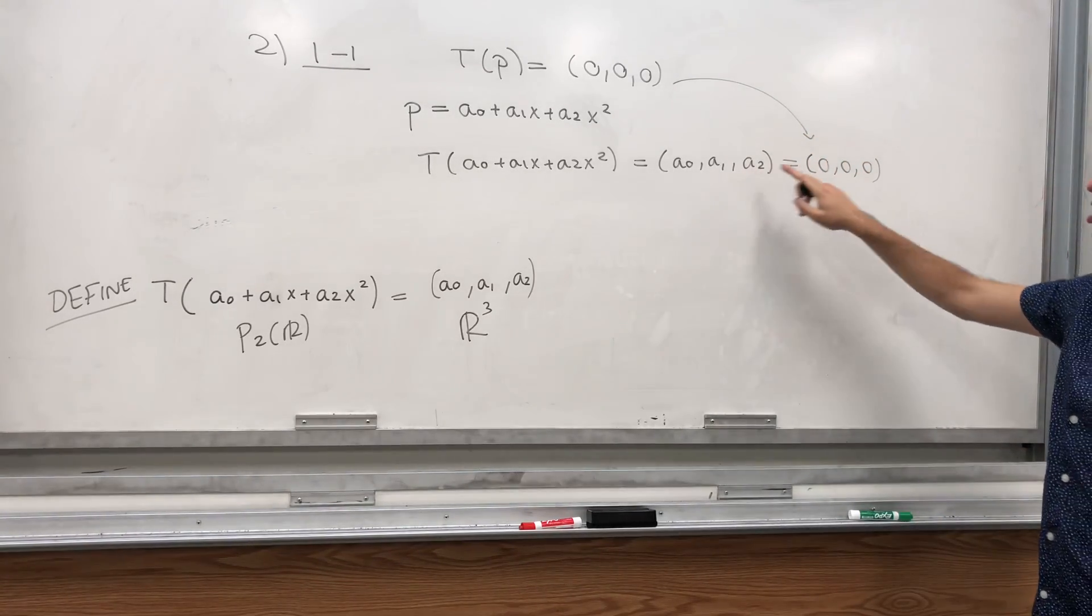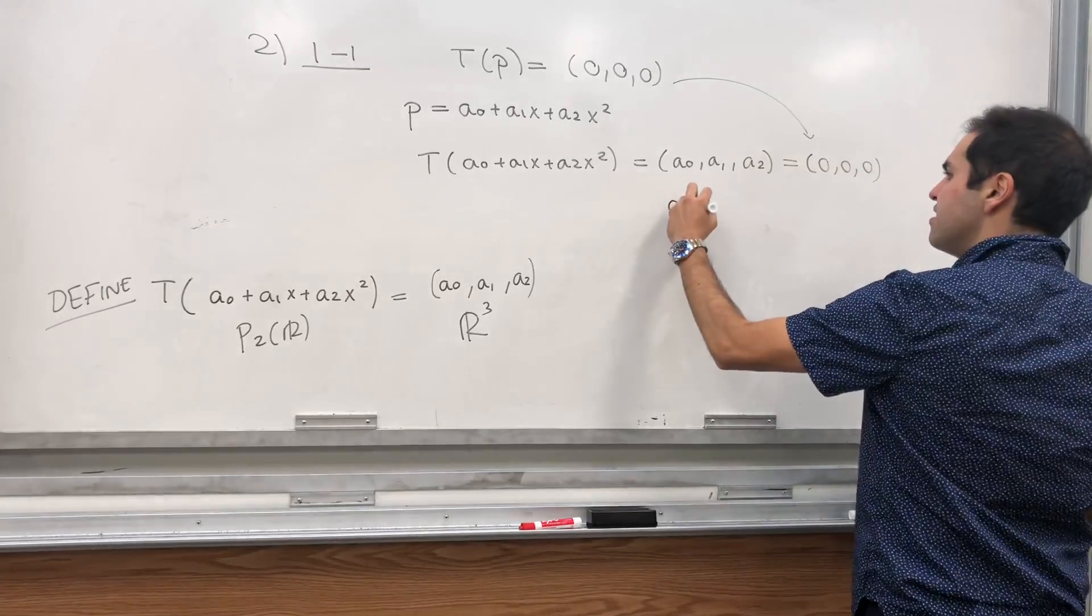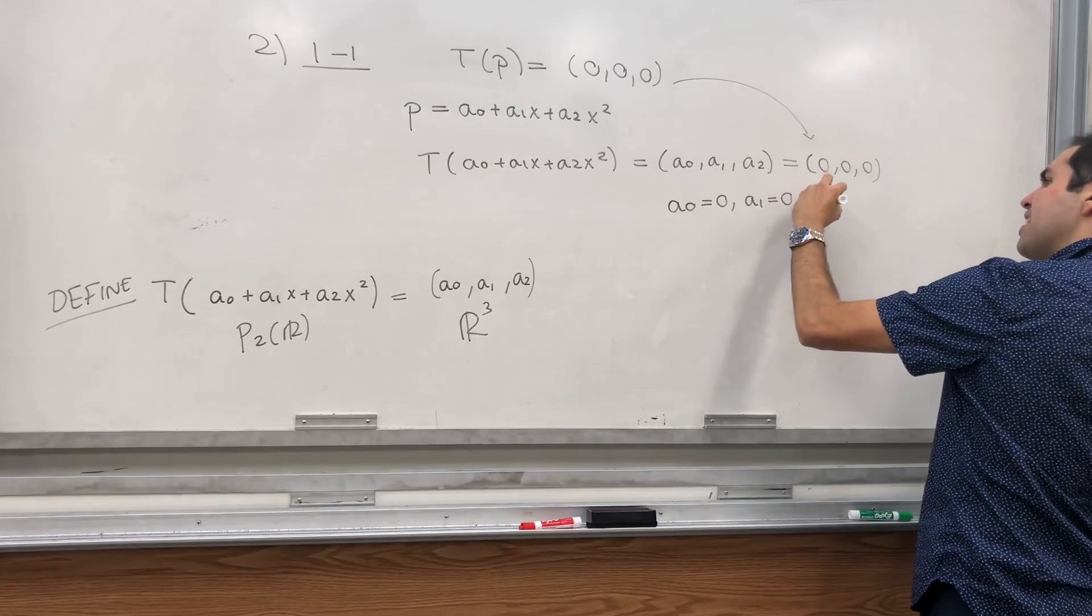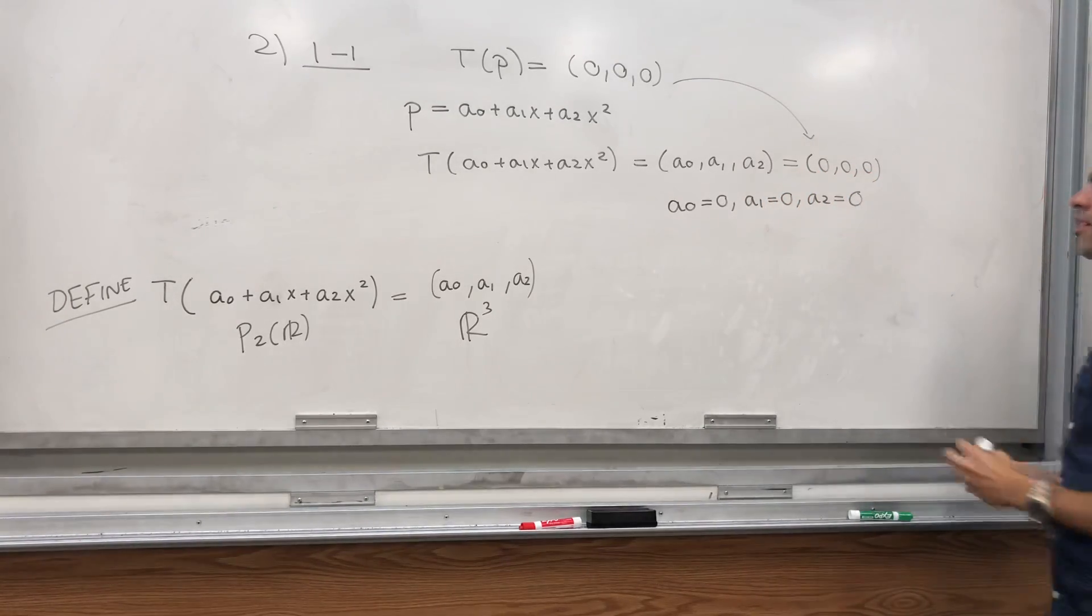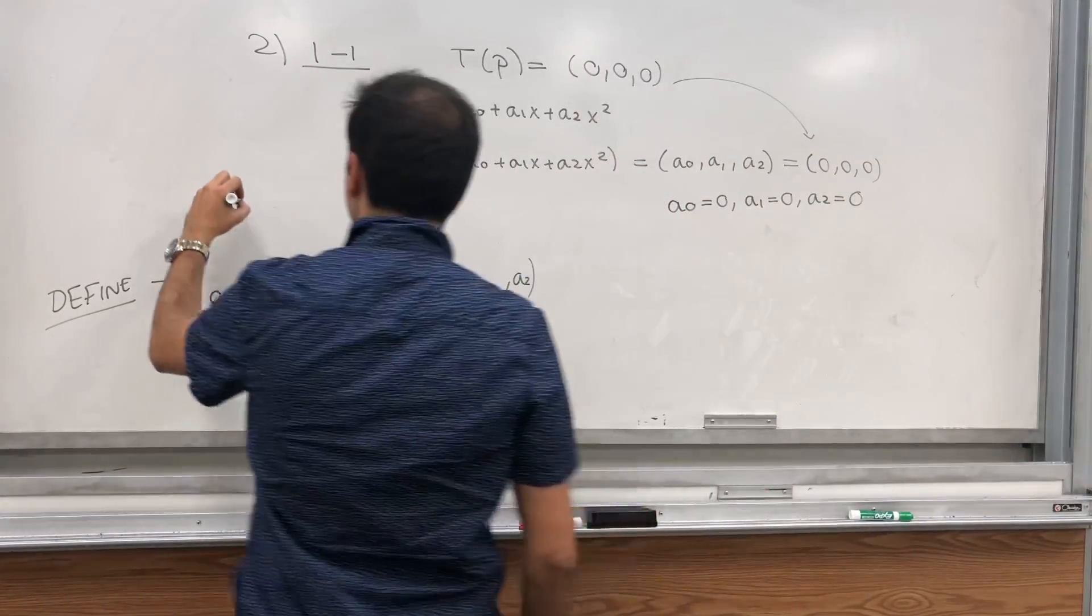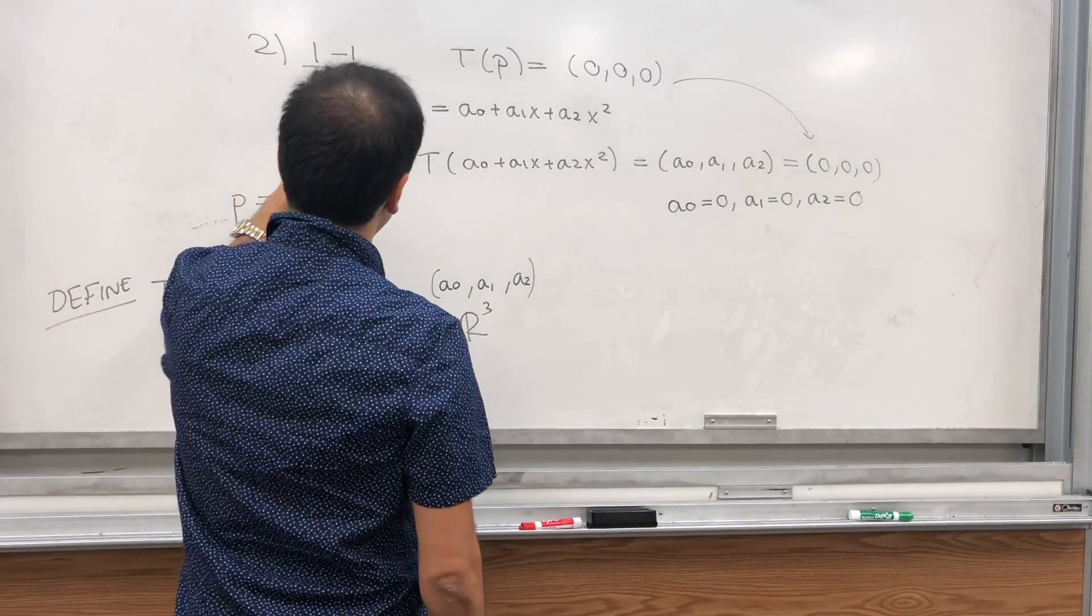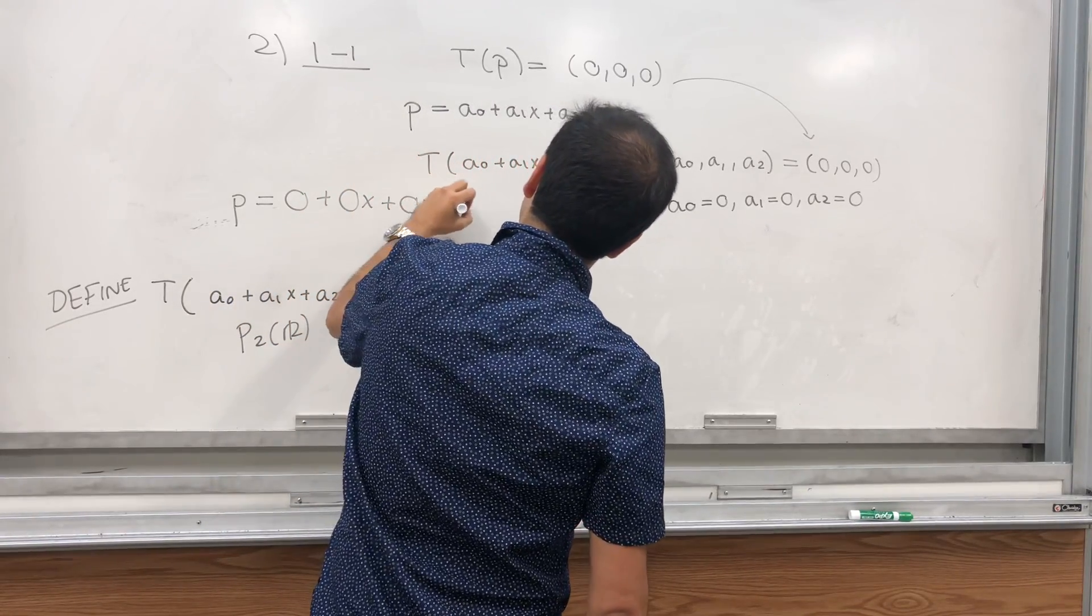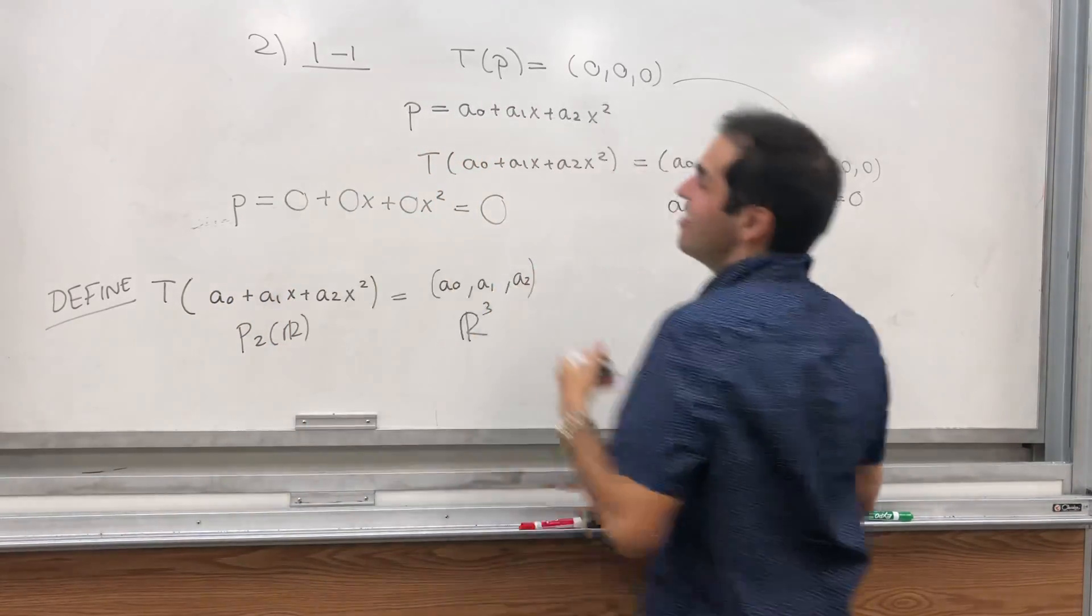So by just comparing, we get a0 equals 0, a1 is 0, and a2 is 0. And therefore, what is P is simply 0 plus 0x plus 0x squared, and this is 0.